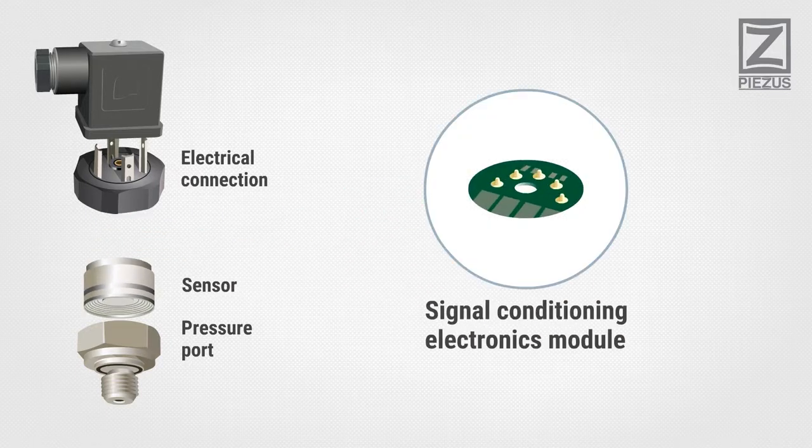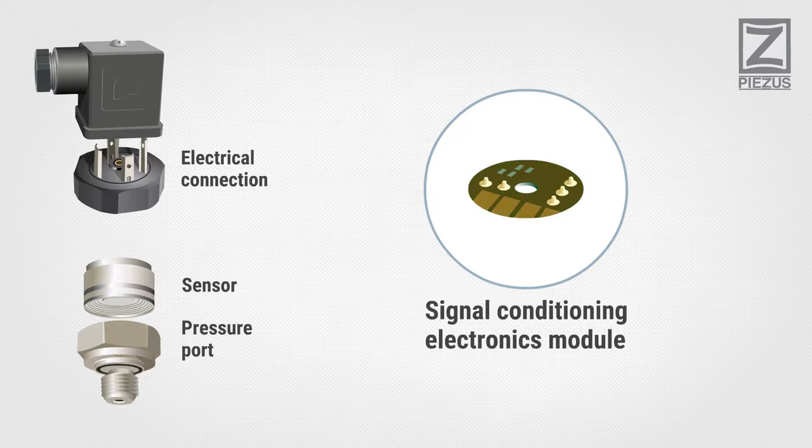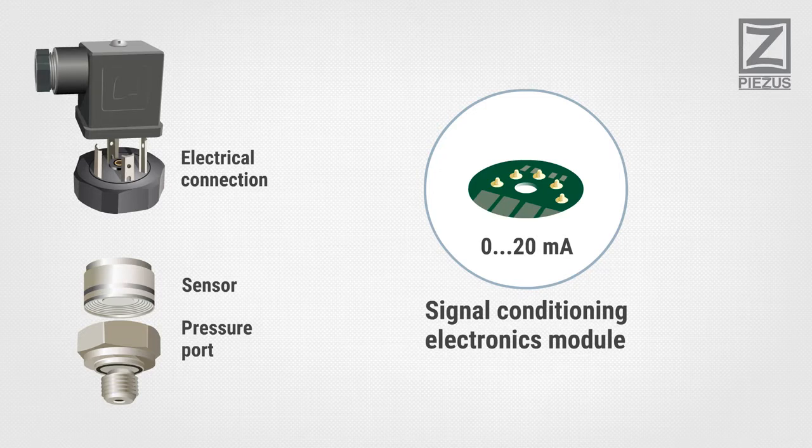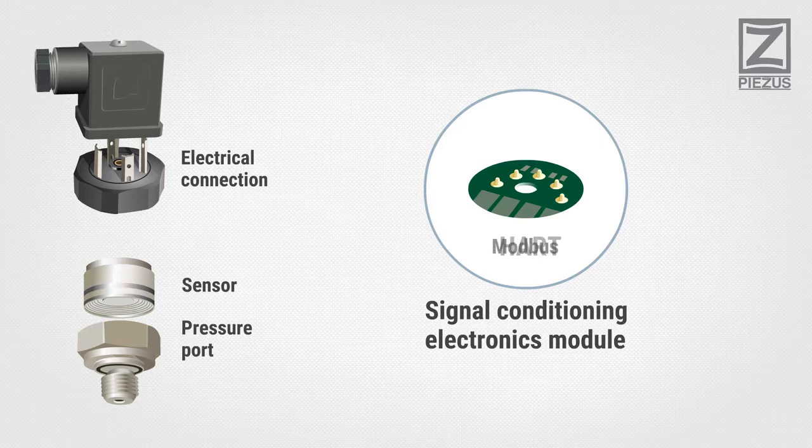Signal Conditioning Electronics Module converts sensor signal into standard normalized electrical output, such as 4 to 20 milliamps, 0 to 10 volts, 0 to 20 milliamps. Various models are also capable of digital communication using HART or MODBUS protocols.